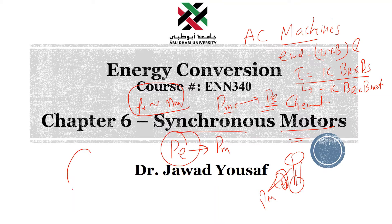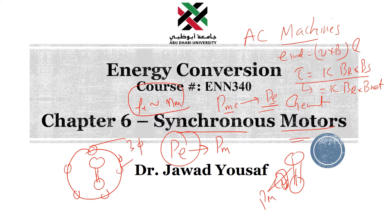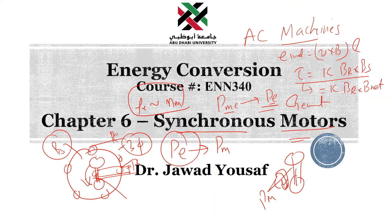The configurations of the generator and motor are similar. In the generator, you are rotating the rotor and getting electrical power at the stator windings. But in the motor case, you supply power at the coils of the stator — three-phase power — and also supply DC power to the field winding of the rotor. This supplied three-phase power induces a stator magnetic field, which causes the rotation of the rotor, converting electrical power to mechanical power.